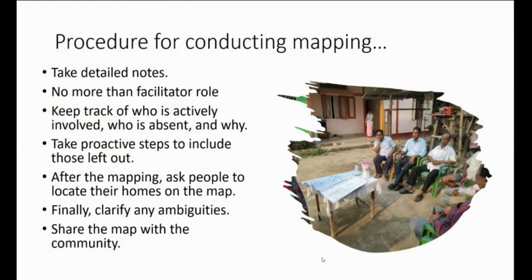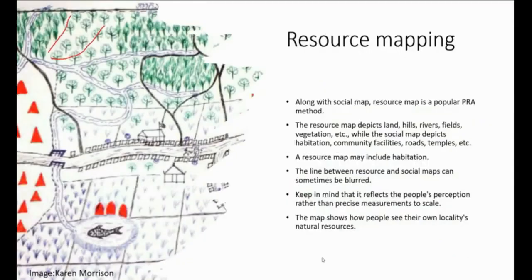After the map is drawn, ask people to locate their homes on the map. Finally, clarify any ambiguities and share the map with the community. After completion of the map, we should share it with the community, because the map is drawn by only four or five people. Other community members will say whether it is right or wrong, and from that we can make modifications if the information is not correct. This mapping should be evaluated at the community level. The terminologies may also vary in PRA because it is very flexible, but the key concepts should be clear to us.